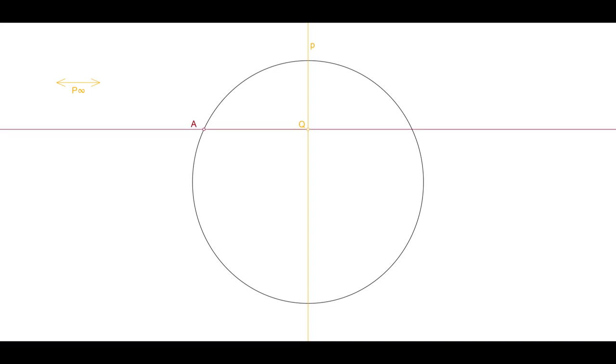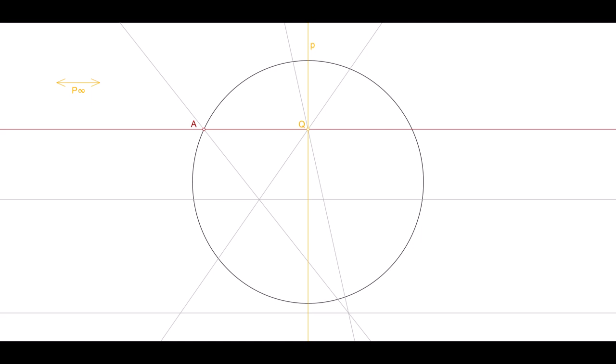Any point A on the circle determines a line in the center P, which in turn determines a point Q in the axis P. Our usual method of completing a quadrangle gives us the harmonic conjugate B of A with respect to P and Q, and B will always lie on the circle.